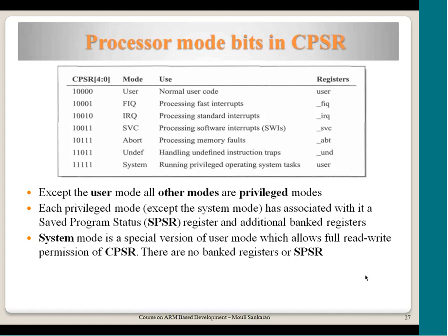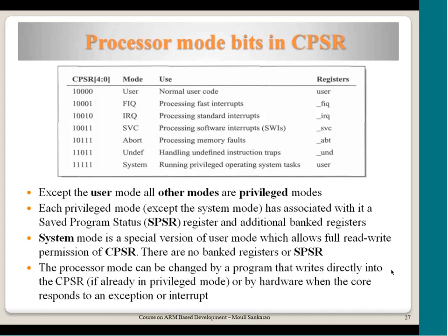Apart from user mode, there is also a system mode, which shares the same register set as user mode with no special banked registers. The only difference is that in system mode, the CPSR content can be modified. The processor mode can be changed by software writing to CPSR, or by hardware when the core responds to an exception. The mode bits in CPSR can be set by any incoming interrupt or by user program code.